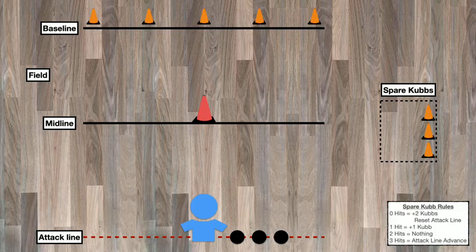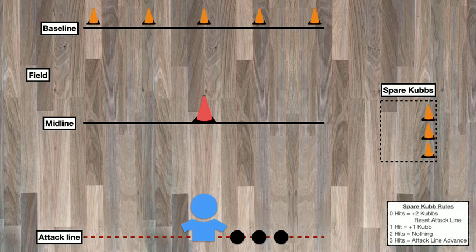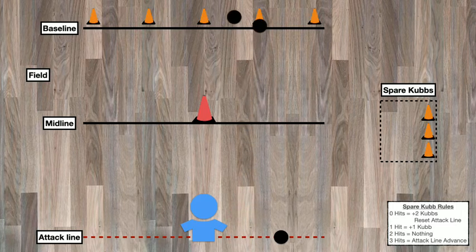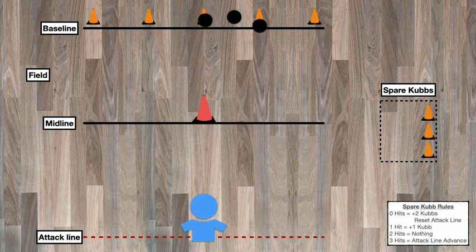First, the player will start by tossing each ball underhand in an attempt to knock down as many Kubbs as possible. On the first one, they're successful. On the second toss, they miss. And on the third one, they are successful as well.